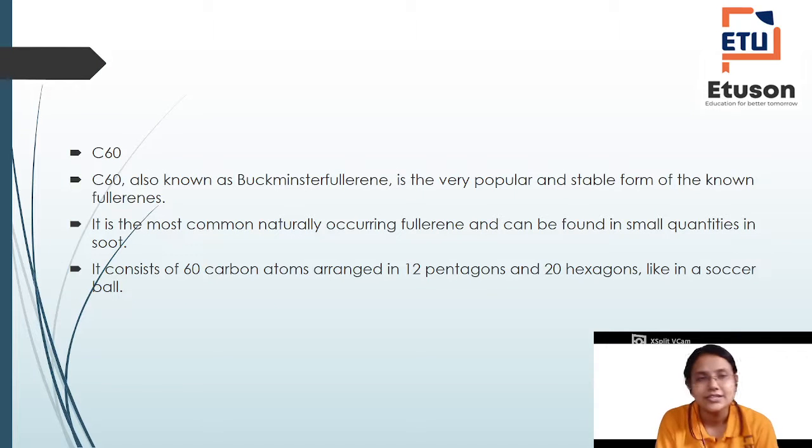C60, also known as Buckminster Fullerene, is a very popular and stable form of fullerene. We have learned that in crystalline allotropy there is diamond, graphite, and fullerene. Fullerene, for example, is C60, which we call Buckminster Fullerene, which is a very stable form of carbon. It is the most commonly occurring fullerene and can be found in small quantities in soot. It's very common in nature. It consists of 60 carbons arranged in 12 pentagons and 20 hexagons, like in a soccer ball or football.